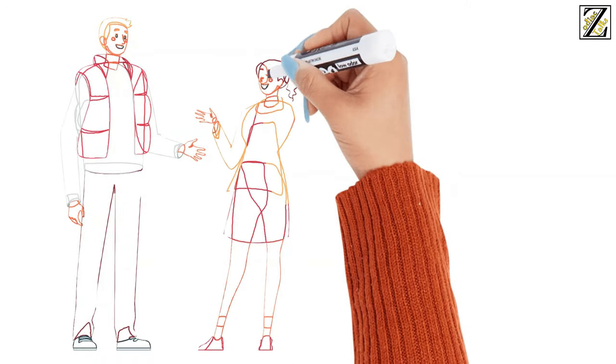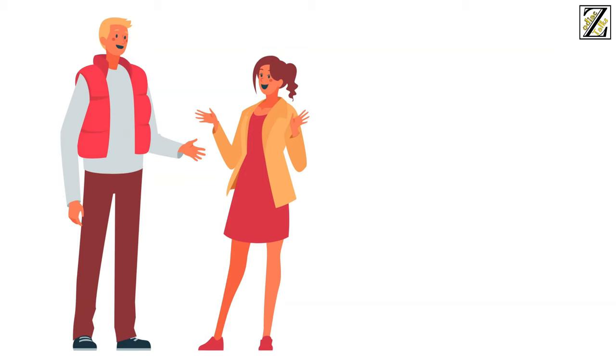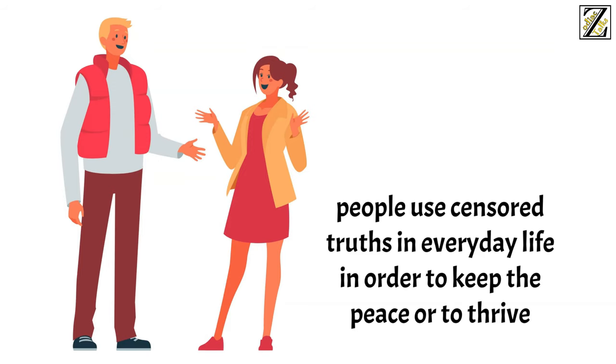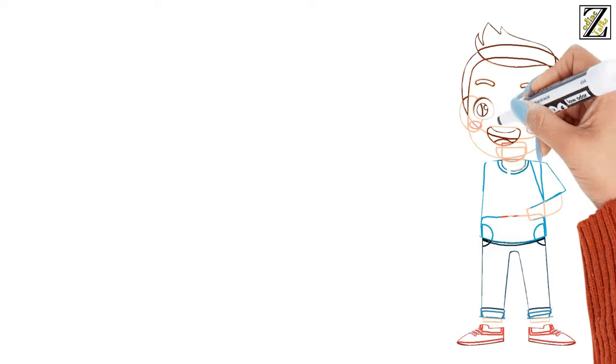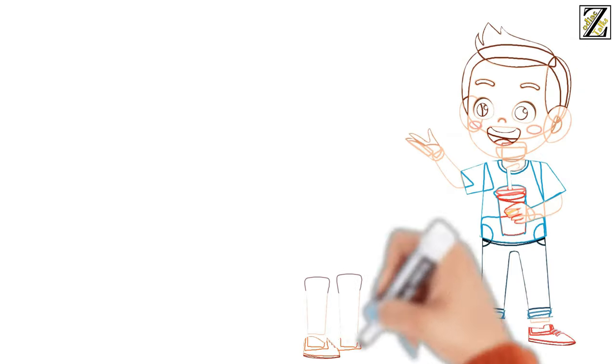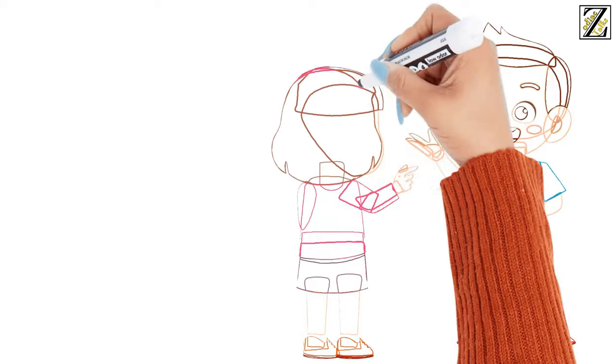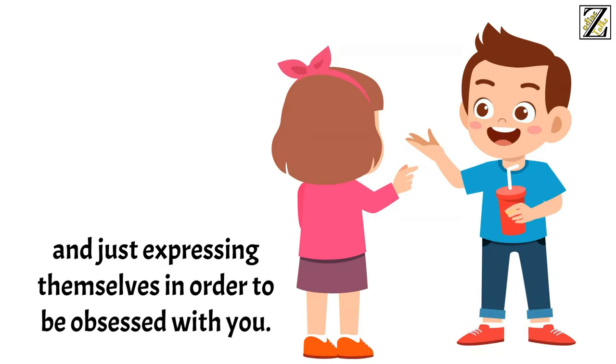Not everyone out there is out to get you. People tell white lies. People use censored truths in everyday life in order to keep the peace or to thrive. That's just the ugly truth of the world. But that doesn't mean that every human on this planet is out there to get you or has it in for you. Most people are simply too busy stuck in their own heads, living their own lives, and just expressing themselves.